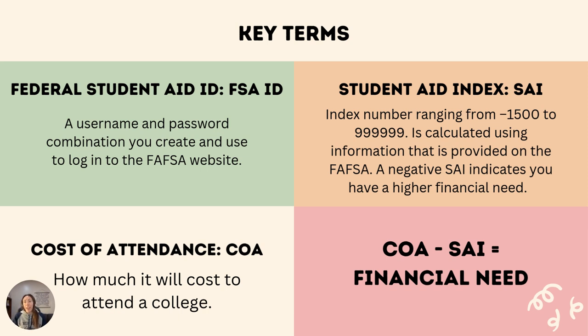To tie it all together, colleges will determine a family's financial need with this equation. Colleges use their specific COA, or cost of attendance, subtract a student's SAI number from the COA, and they are then left with a final number indicating a student's financial need. This information is provided on the financial aid package students receive following an acceptance to a college.